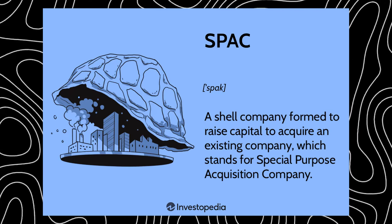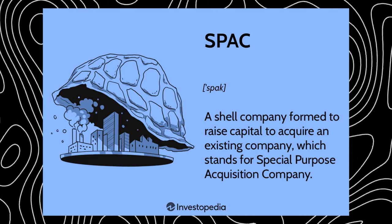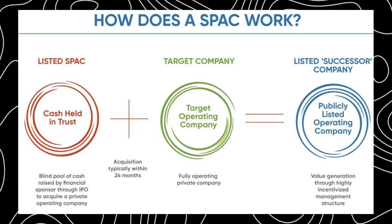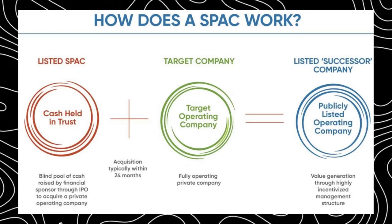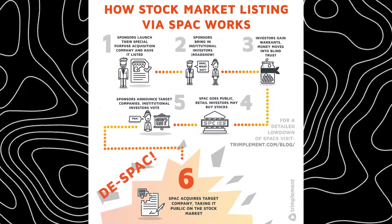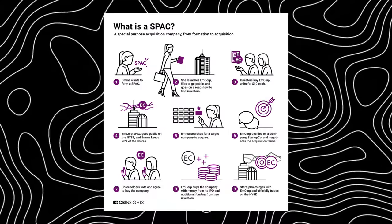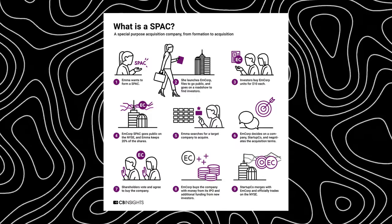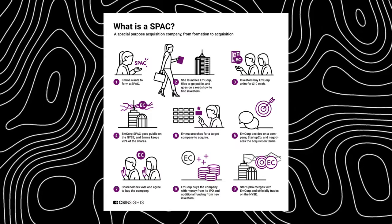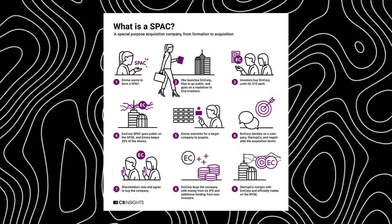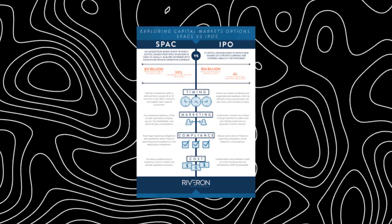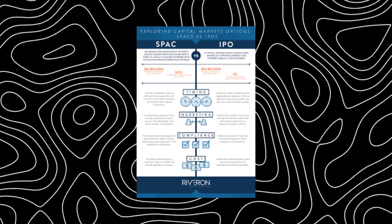SPAC: a Special Purpose Acquisition Company is like a shell corporation designed for a company that wants to go public without going through the traditional IPO process. A SPAC is a financial company already vetted through the IPO process — after it goes public, it sits dormant. When a company wants to go public, it simply merges with or buys out the SPAC, streamlining the process and quickly becoming publicly traded. The best analogy: it's like having a friend wait in line for you and swapping in right when they reach the front. SPACs have gained popularity as an easy alternative to traditional IPOs.